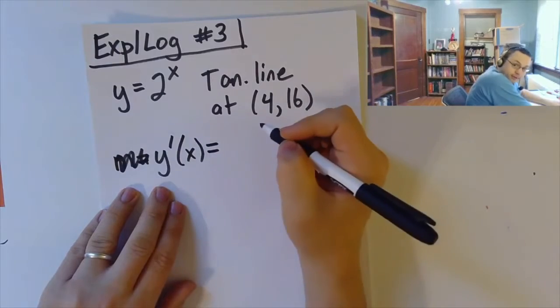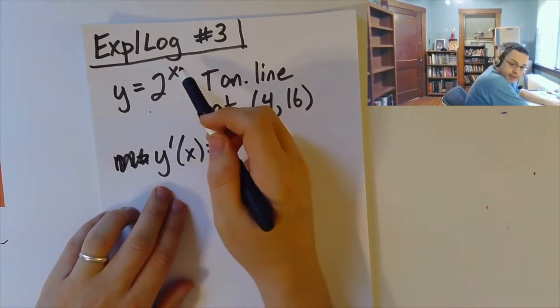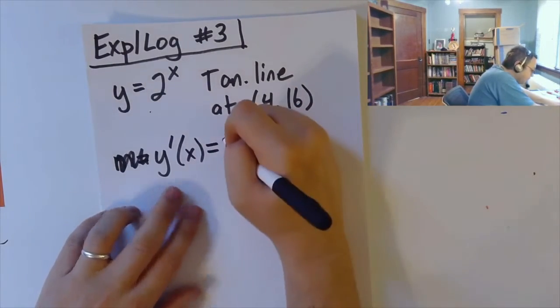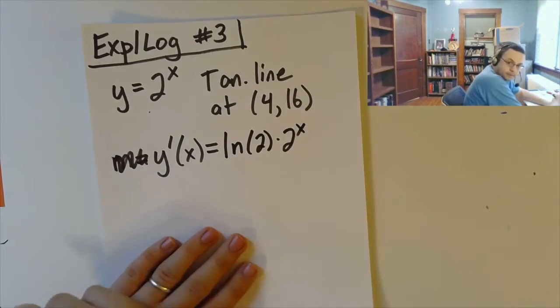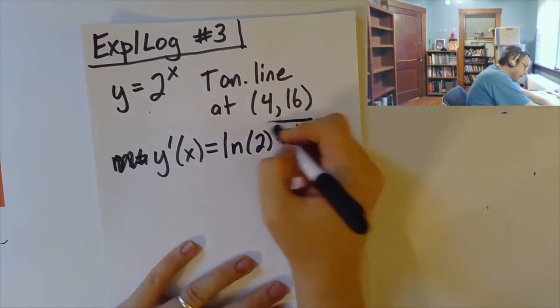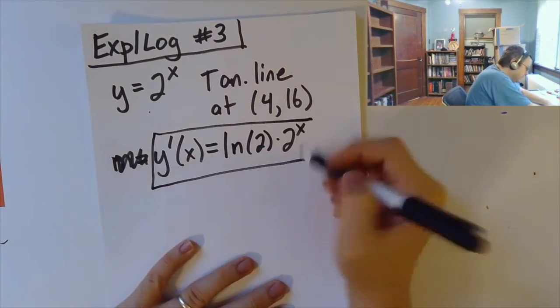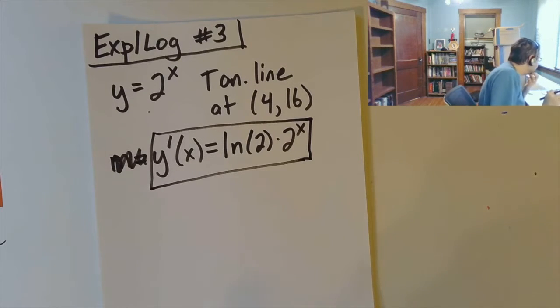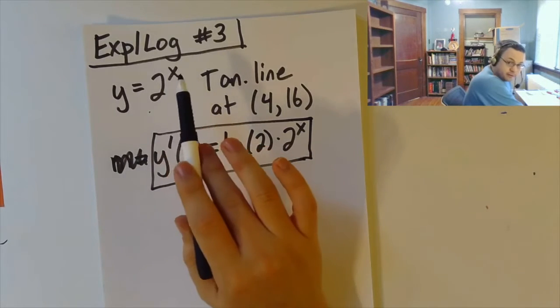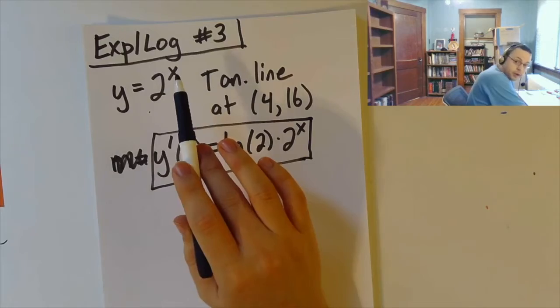So y prime of x in this case, that's the derivative of 2 to the x. Remember by our formula, this is the natural log of 2 times 2 to the x. Again, there is no way to do this outside of knowing the formula from the first new video or second new video that I posted where we talked about the formulas for derivatives of other exponents and other logs.